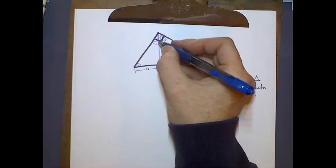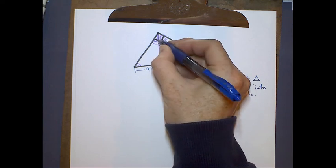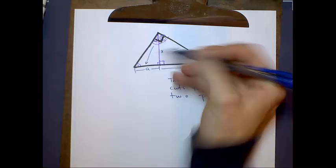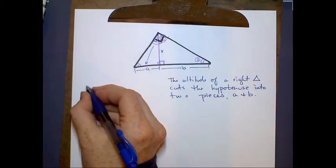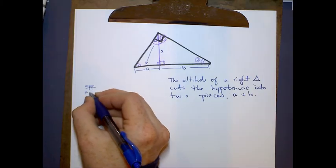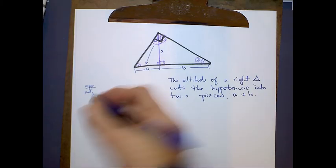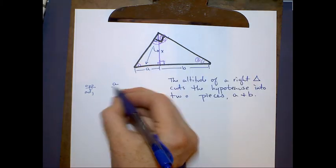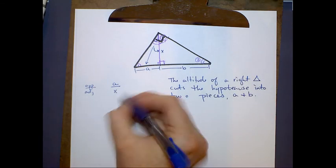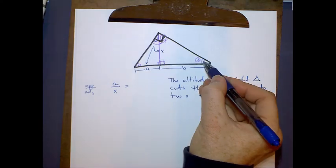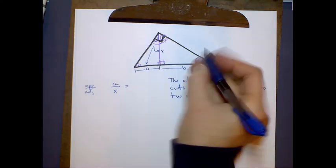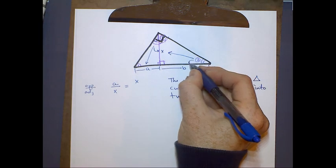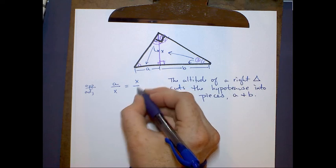So I'm going to pick angle number two here. And in this triangle, the opposite leg to two is A. So let's talk about opposite versus adjacent. So the opposite leg is A. The adjacent leg is X. Now if we go over here and we look at angle two, what is opposite two? Well, it's X and the adjacent leg is B.